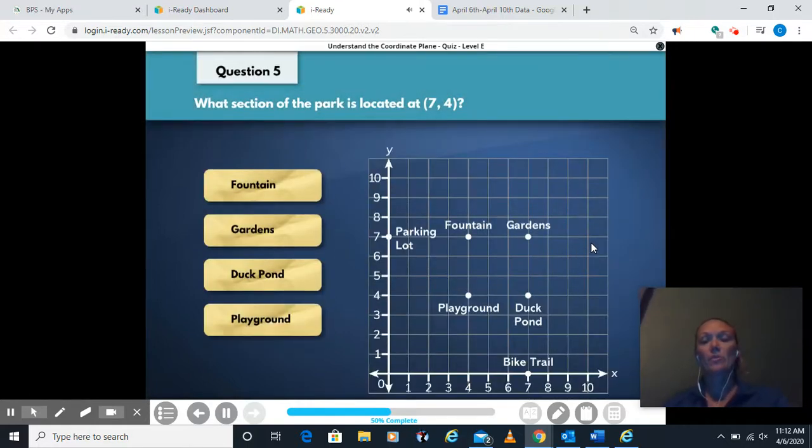What section of the park is located at 7, 4? So I'm going to go over 7, because that's my x, up 4. And I'm at the duck pond.